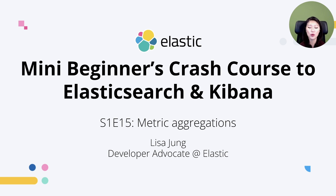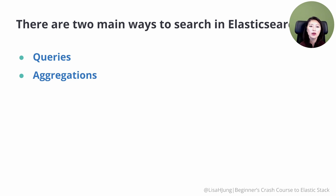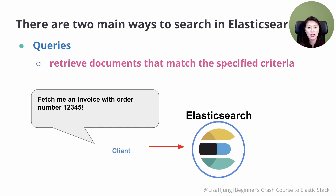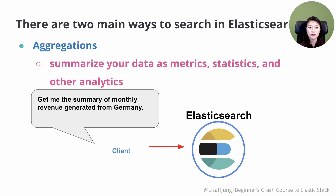Before we get to that, let's do a quick review. There are two main ways to search in Elasticsearch: queries and aggregations. Queries are used to retrieve documents that match the specified criteria. For example, let's say you're managing an e-commerce app and you want to pull up an invoice with order number 12345. In this case, you would send a query to retrieve that invoice. But sometimes we're not only interested in retrieving documents — we also want a summary of data because it contains the insights we're looking for.